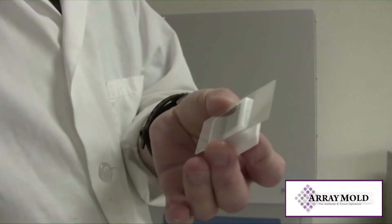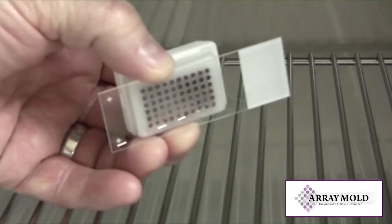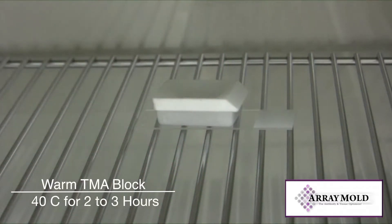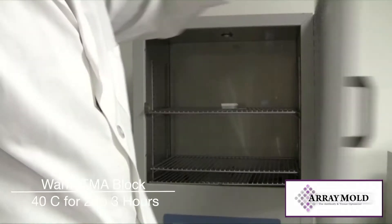Some people like to leave their array blocks in the oven overnight to soften and set the punches, but we have found two to four hours works just fine for us. You may want to test this for yourself because some tissues might need more setting time.